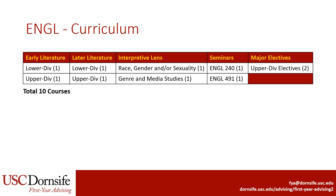Literature majors will take two courses in early literature and another two in later literature. For both categories, students will take one course at the lower division 100 or 200 level and one at the upper division 300 or 400 level. The interpretive lens category also requires two courses: students will take a course on race, gender, and/or sexuality and another on genre and media studies.